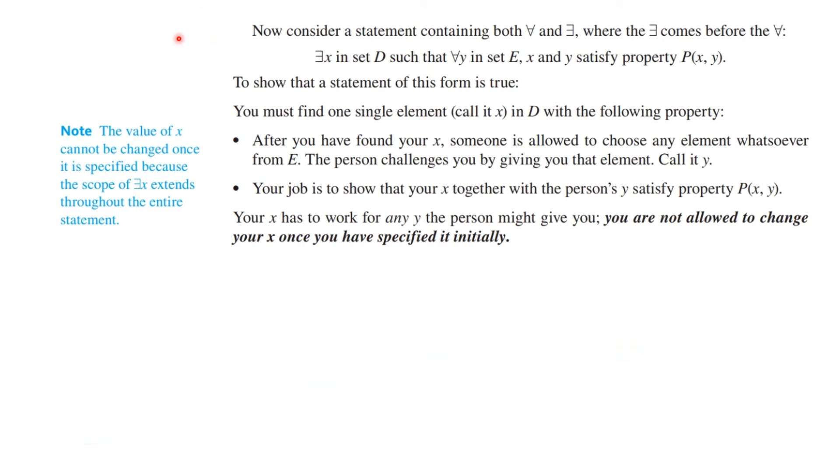Now, consider a statement containing both for every and there exists, but where there exists comes before the for every. There exists x in a set D such that for every y in set E, x and y satisfy the property P of xy. To show that this is true, you must find a single element, call it x in D, with the property. After you've found your x, someone is allowed to choose any element whatsoever from E. The person challenges you by giving you that element, call it y. Your job is to show that your x, together with the person's y, satisfy the property P of xy.